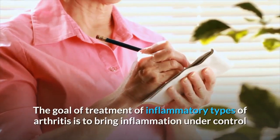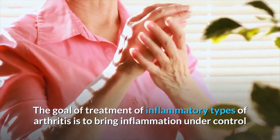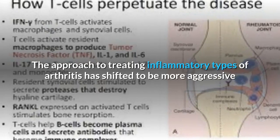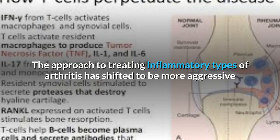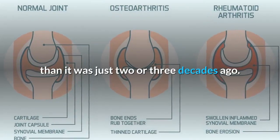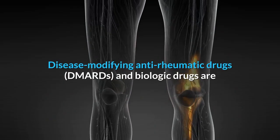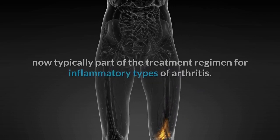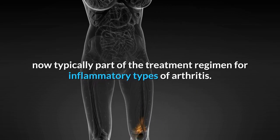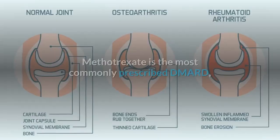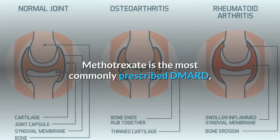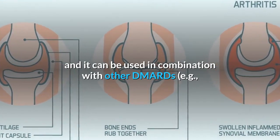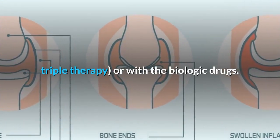The goal of treatment of inflammatory types of arthritis is to bring inflammation under control and to prevent permanent joint damage. The approach to treating inflammatory types of arthritis has shifted to be more aggressive than it was just two or three decades ago. Disease-modifying anti-rheumatic drugs, DMARDs, and biologic drugs are now typically part of the treatment regimen. Methotrexate is the most commonly prescribed DMARD, and it can be used in combination with other DMARDs, e.g., triple therapy, or with the biologic drugs.